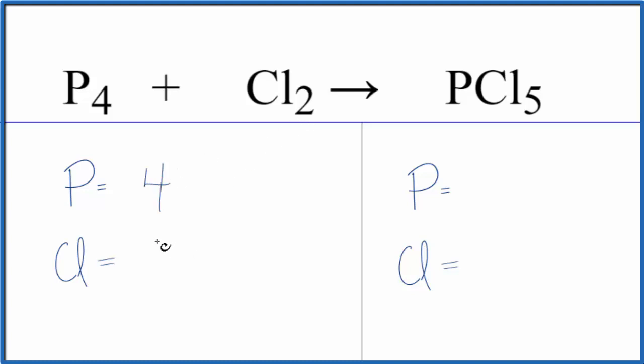Four phosphorus atoms and two chlorine atoms. Product side, one phosphorus, five chlorine atoms.